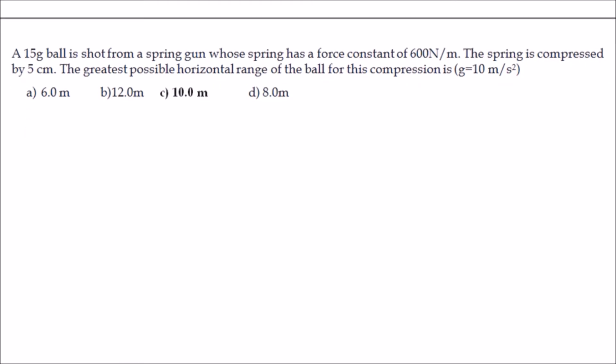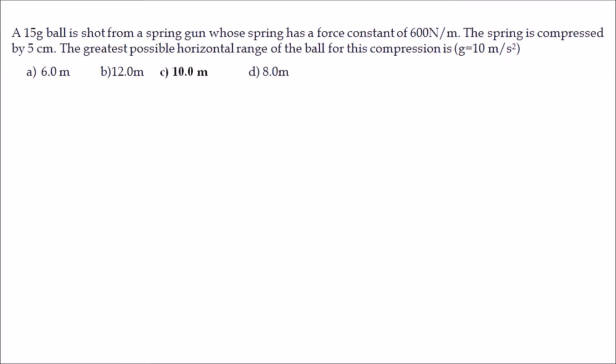The next problem: a 15-gram ball is shot from a spring gun whose spring has a force constant of 600 N/m. The spring is compressed by 5 cm. The greatest possible horizontal range of the ball for this compression will be equal to what? Let me first draw the figure and then solve the problem.